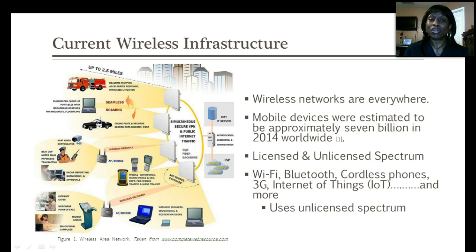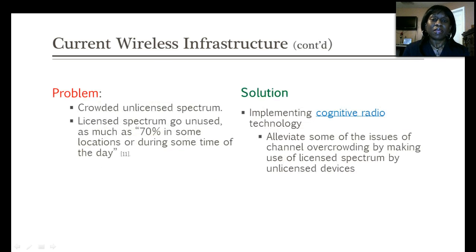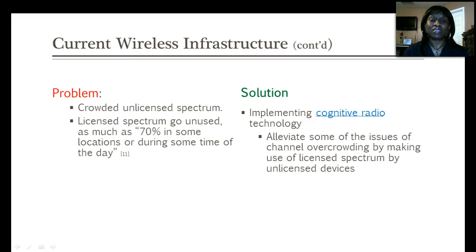Some of the devices on the unlicensed spectrum are Wi-Fi, Bluetooth, cordless phones, remote controls, devices from the Internet of Things technology, and much more. With all these devices, there is a lot of traffic resulting not just from data, but from VoIP traffic, video streaming, audio, and much more.